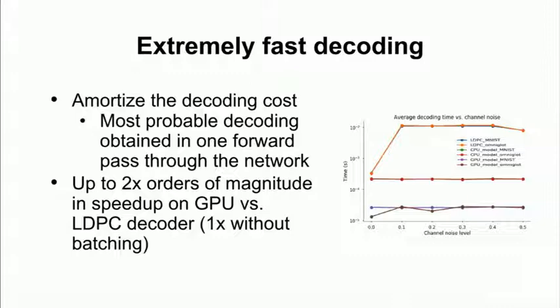So what this means is that if I have a latent code, and I want to find the most probable decoding, this literally just requires one forward pass through the decoding network, which buys us almost 2x or an order of magnitude speedup when compared to traditional decoding algorithms like LDPC, which rely on iterative belief propagation.